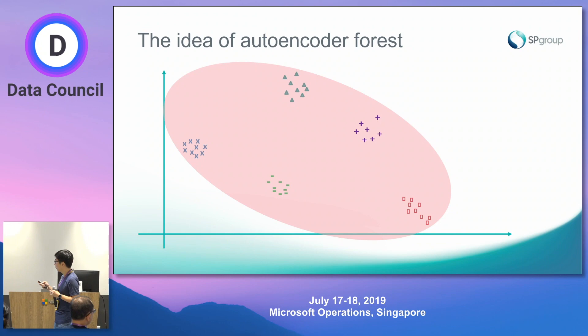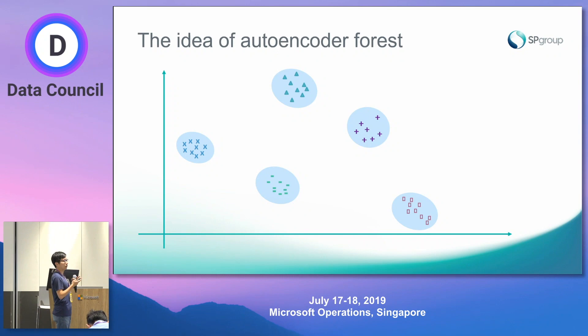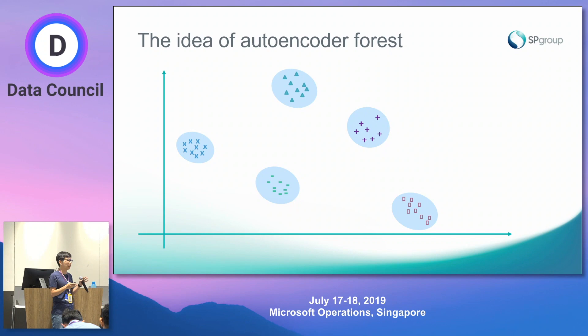The idea is simple: instead of building one model, what if we build multiple models — one focusing on each individual structure or cluster? By doing this, every single model really focuses on a specific pattern from the training data and avoids involving the unnecessary areas as much as possible. This is the motivation behind the challenge and the basic idea underlying the Autoencoder Forest.